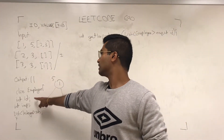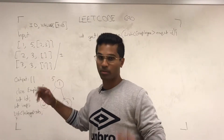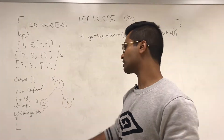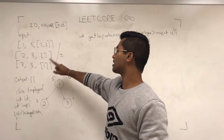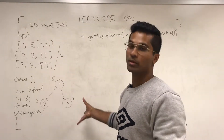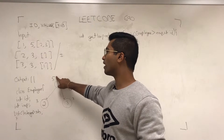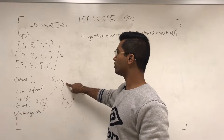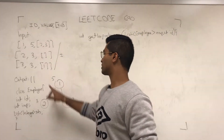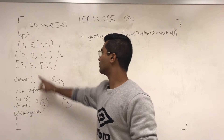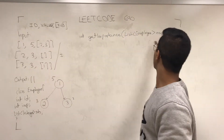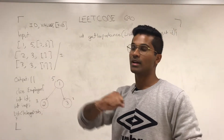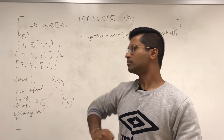They give us a custom class that has an ID and importance per employee, and then a list of integers who are that employee's subordinates. I drew the graph for the given example. Employee 1 has a value of 5 and has employees 2 and 3 as his subordinates. These guys each have a value of 3. The question asks: if I give you an ID, tell me the total value of that person and all the subordinates below them.